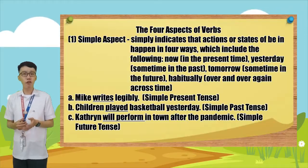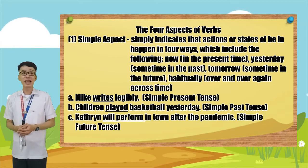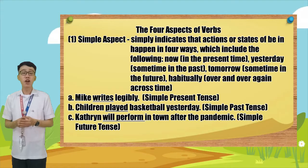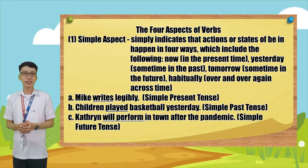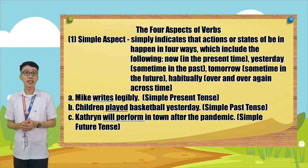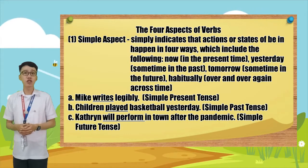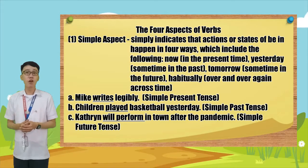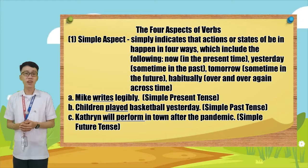Let's study further the four aspects of verbs. Here are some more examples of the four aspects. Number one: simple aspect. Simple aspect simply indicates that actions or states of being happen in four ways: now, in the present time; yesterday, sometime in the past; tomorrow, sometime in the future; and habitually, over and over again across time.